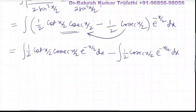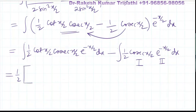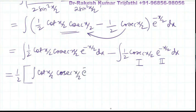In the second integral, we apply the integration by parts formula, assuming cosec(x/2) as the first function and e^(-x/2) as the second function. Taking 1/2 common from both parts, the expression becomes cot(x/2)·cosec(x/2)·e^(-x/2) dx minus the IBP bracket.